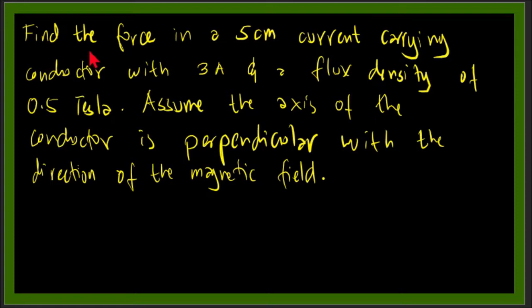Find the force in a 5 cm current-carrying conductor with a 3 ampere current and a flux density of 0.5 Tesla. This means that the wire is placed in a magnet which has a flux density of 0.5 Tesla.